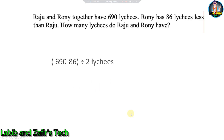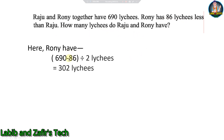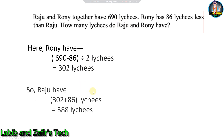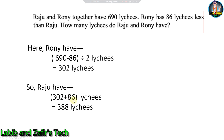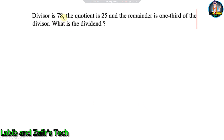Next problem: Raju and Ronnie together have 690 litchis. Ronnie has 86 litchis less than Raju. How many litchis do each have? Solution: Ronnie = (690 − 86) ÷ 2 = 302 litchis. Raju = 302 + 86 = 388 litchis.